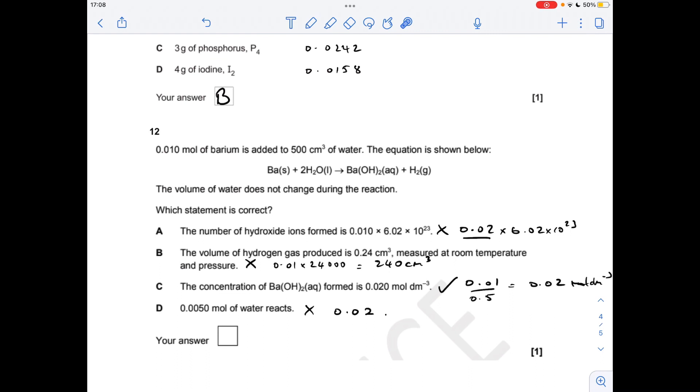Last question. I've worked out what the answer would be for all of these statements to see if it's a correct one or not. So the number of hydroxide ions formed is that times 6.02 times 10 to the 23. Well no, it wouldn't be, because for every mole of barium that's reacted, you get twice as many moles of hydroxide ions, so it would be 0.02 times Avogadro's number for that one. The volume of hydrogen gas produced is that many centimeters cubed. Well, the actual value is 240 cm cubed, because you're going to get the same moles of hydrogen as you've got barium times up by 24,000 gives you that.